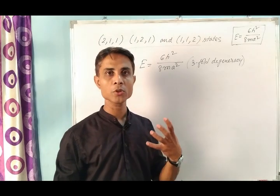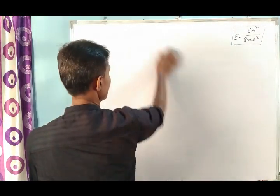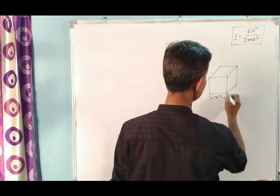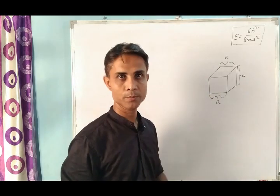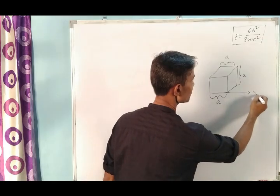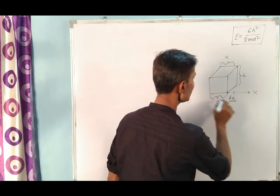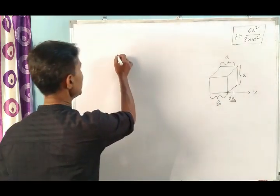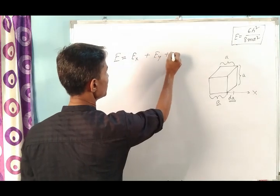What happens when distortion takes place in a cubical box? Let us consider a cubical box of length A. For this box, if we increase the length A along the x-axis by dA, the energy equation E is equal to Ex plus Ey plus Ez will be changed.